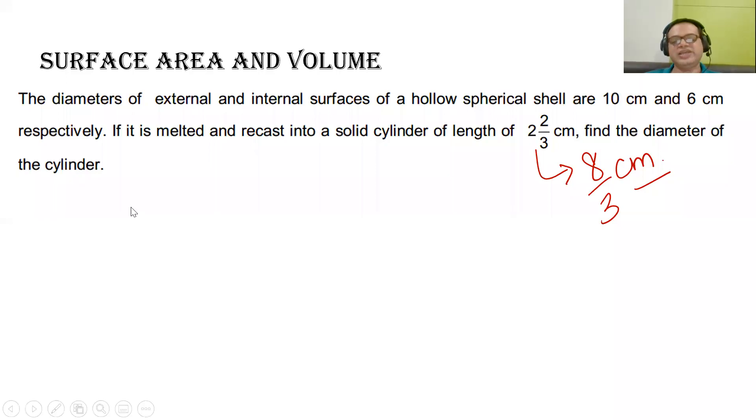The question is, if the external and internal surface of a hollow sphere, the diameter of the external and internal surface are 10 cm and 6 cm. This is not 10 cm, this should be 5 cm and this should be 3 cm, because we are talking about radius here. So this should be 5 cm and 3 cm. And it is melted and recast.